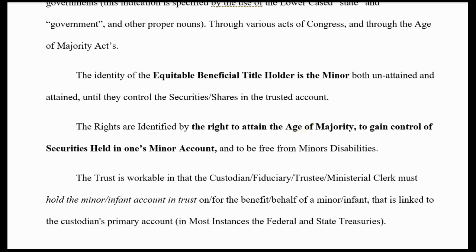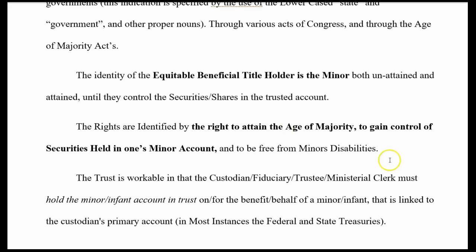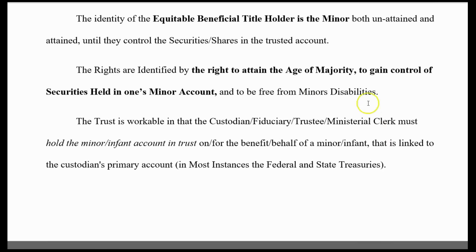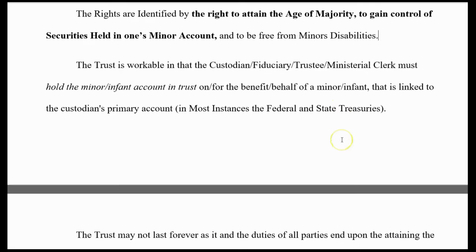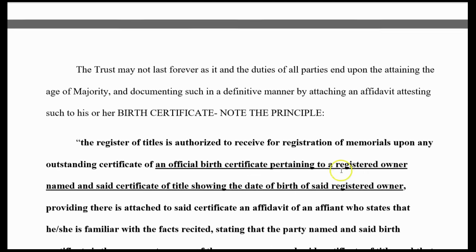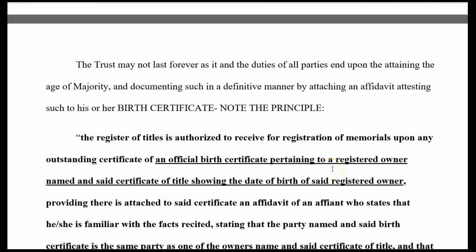Now you're telling them as trustees to do their job. Your rights are identified by the right to attain the age of majority, to gain control of the securities held in your minor account, and to be free from minor disabilities. Once you name this, they are required to start protecting the trust. They're supposed to be doing it anyway, but now that you identify yourself, they have to follow your orders — because there's no way out. You're like the stockholder in a corporation; you are ultimately the decision maker.